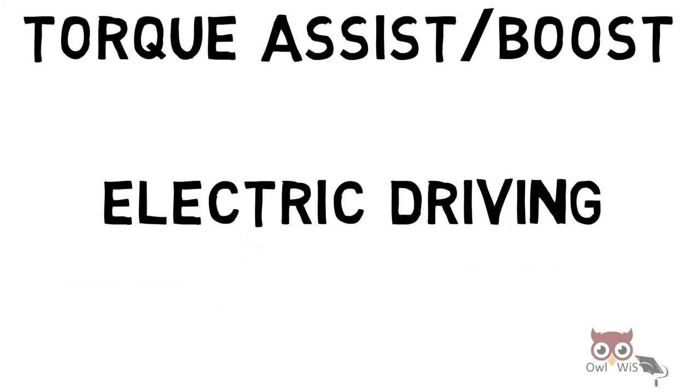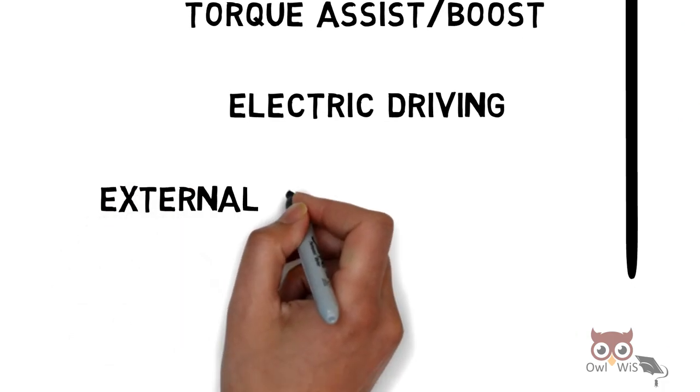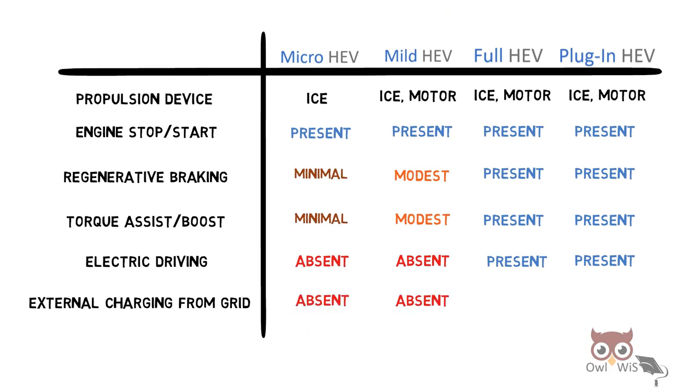Next, electric driving. It is absent in micro as well as mild, but present in HEV and plug-in HEV. Last is external charging from grid, which is absent in the first three and only present in plug-in HEV.